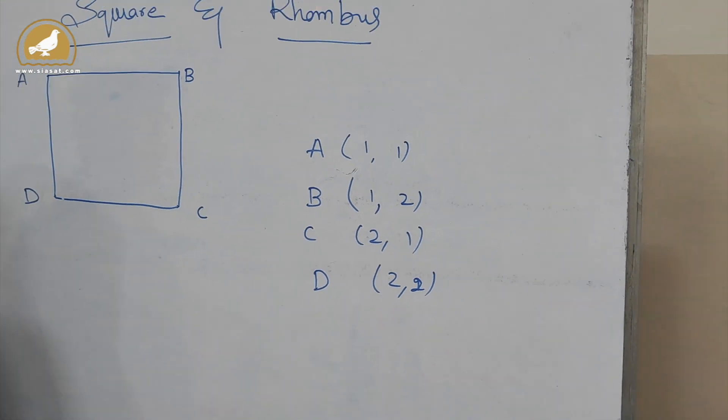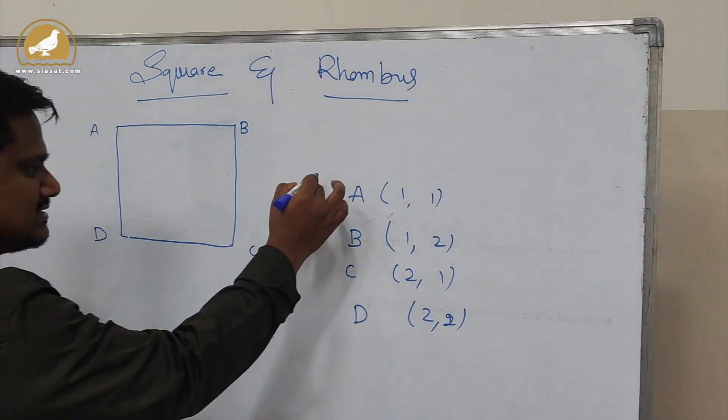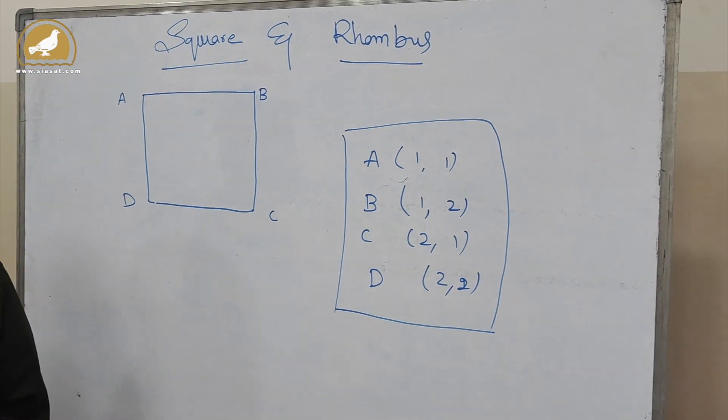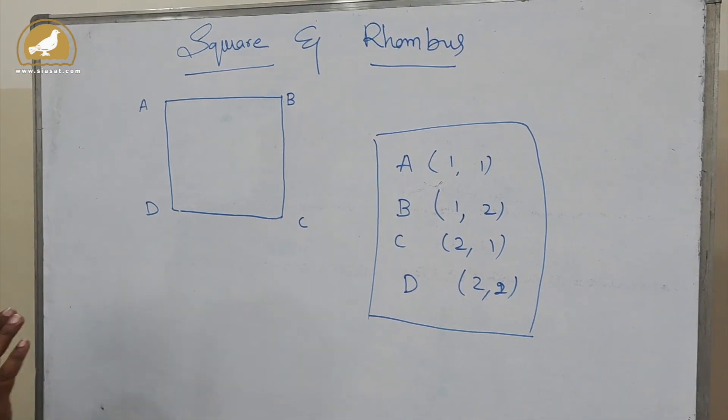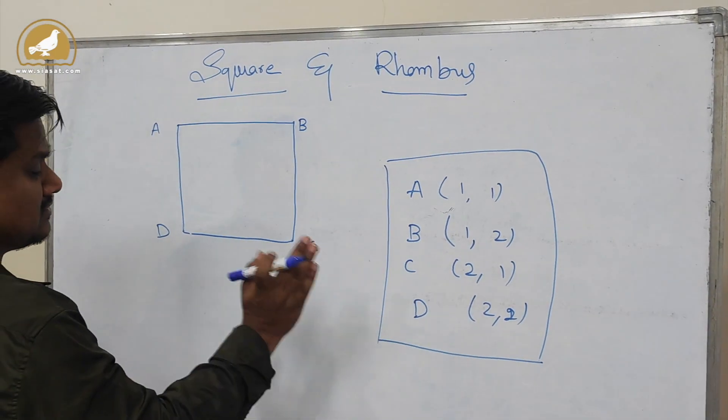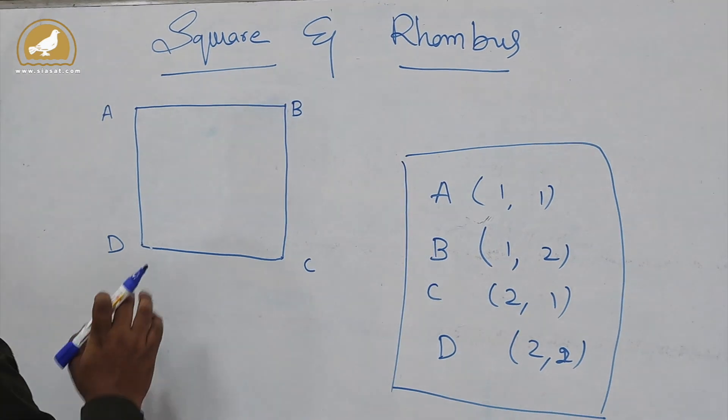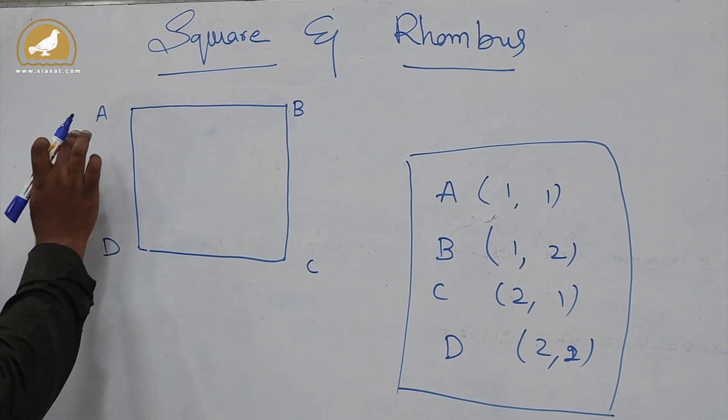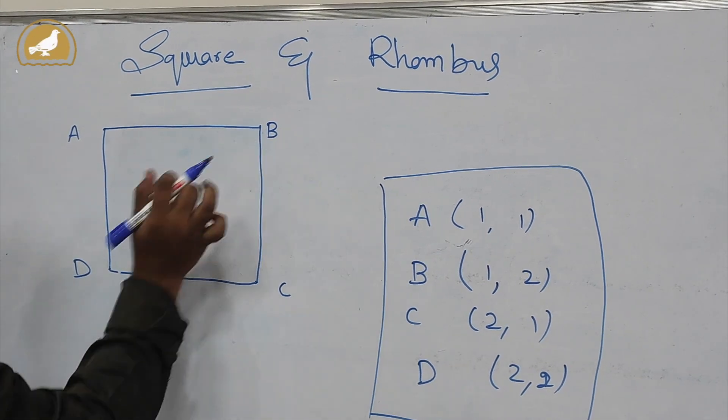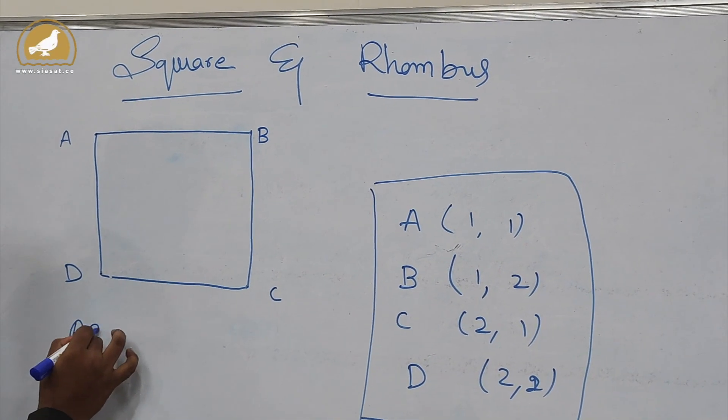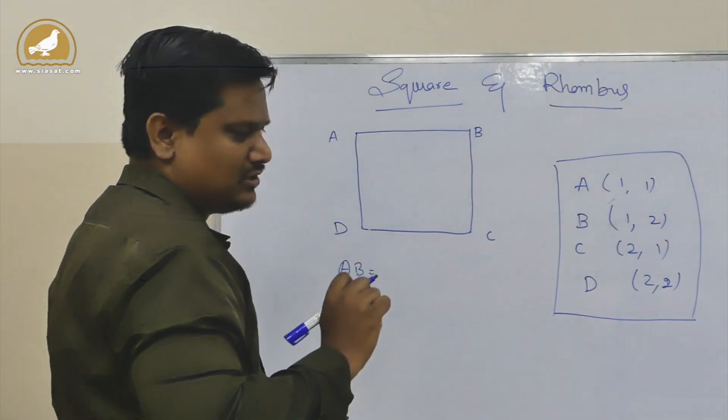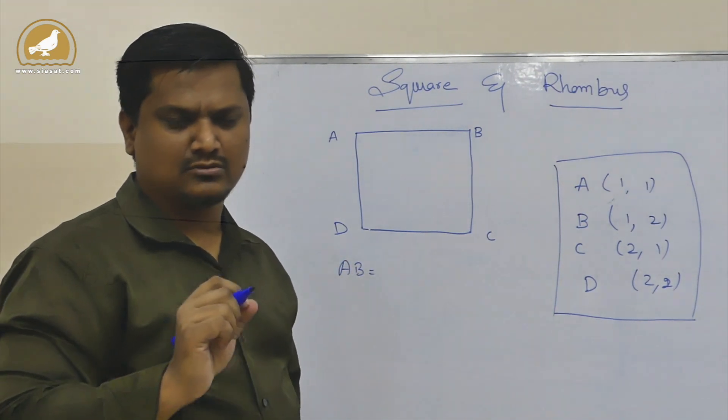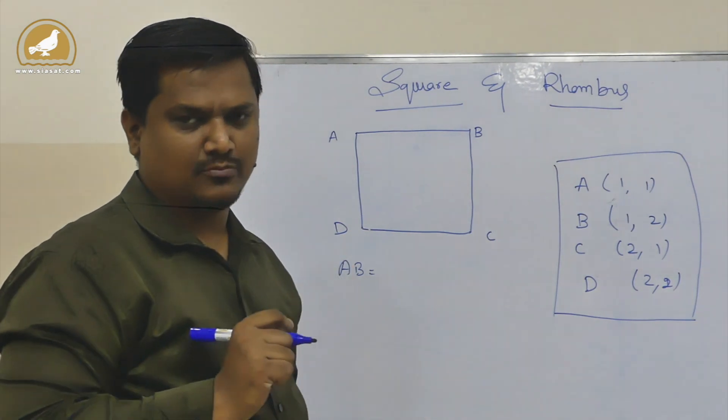To solve such problems, we need to understand what is a square. If I have to calculate the distance between A and B, then what is the formula? You know that: square root of (x2 minus x1) squared plus (y2 minus y1) squared. That was the distance between two points formula.